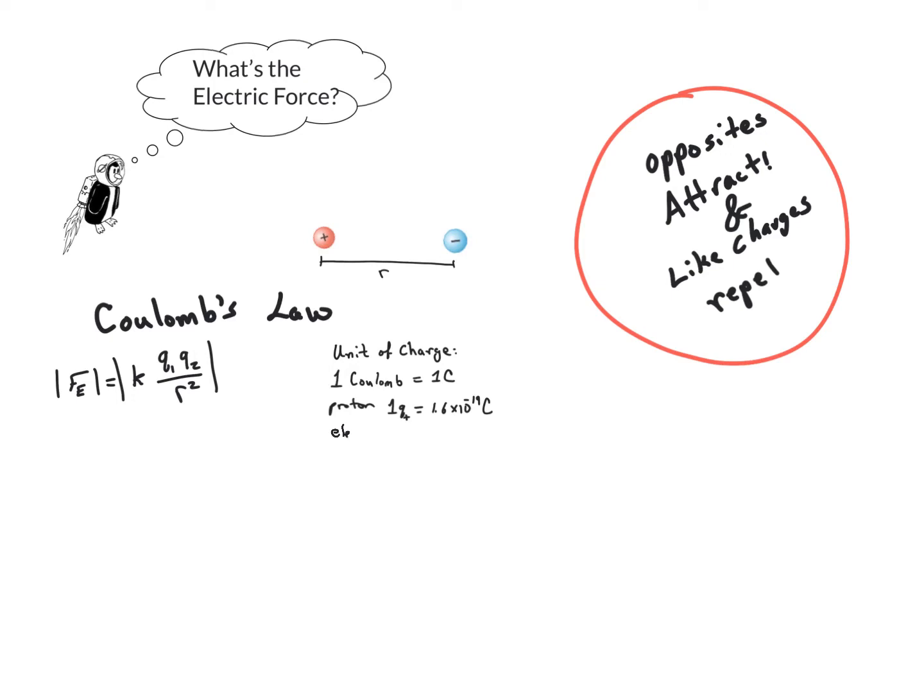Likewise, the electron, or q minus, is equal to negative 1.6 times 10 to the minus 19 coulombs.